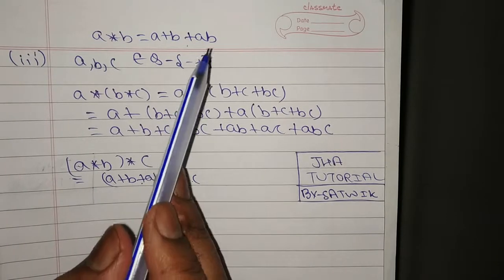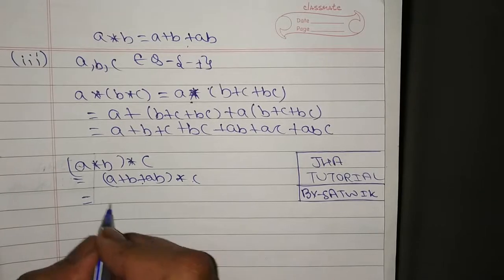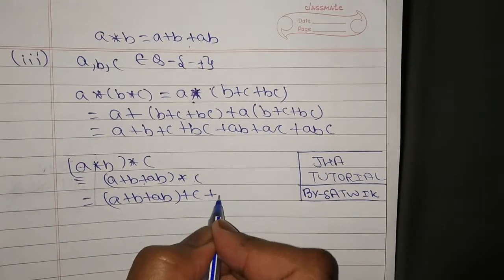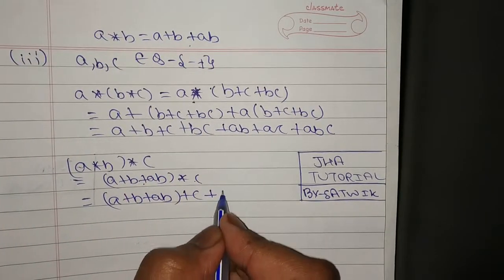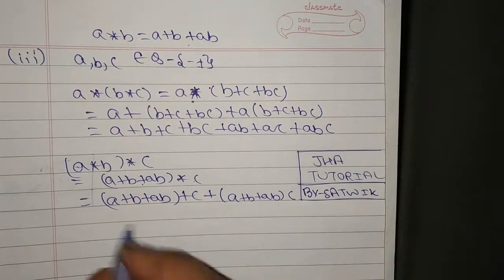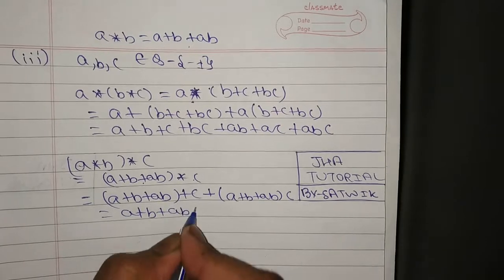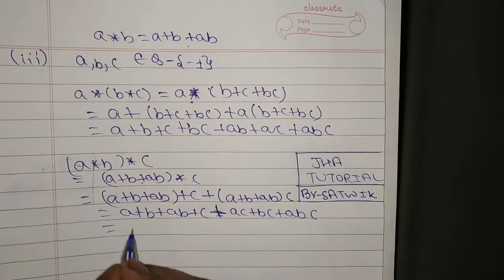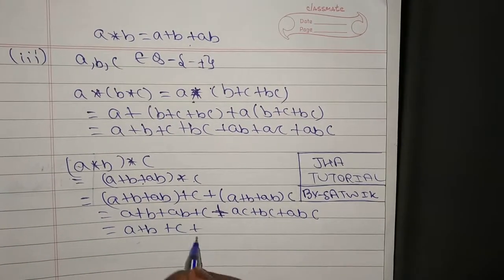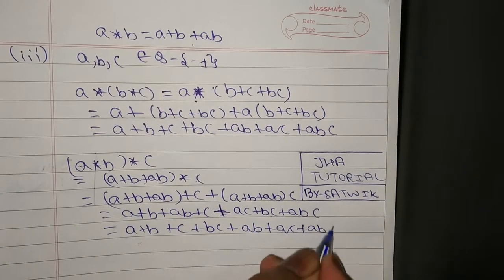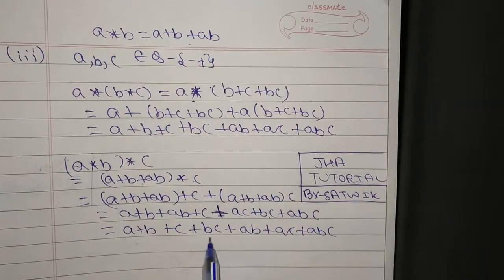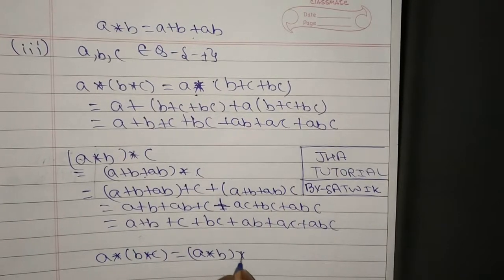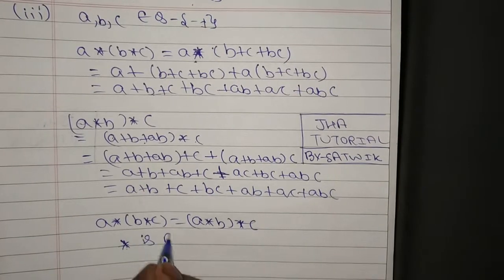Now for a★(b★c): b★c = b+c+bc, then a★(b★c) = a + (b+c+bc) + a(b+c+bc) = a + b + c + bc + ab + ac + abc. Comparing both: (a★b)★c = a★(b★c) = a+b+c+ab+bc+ac+abc. Therefore, star is associative.